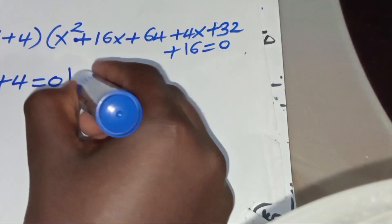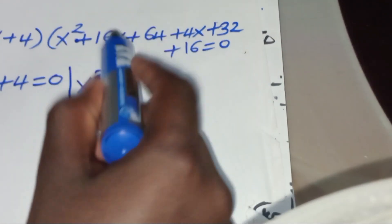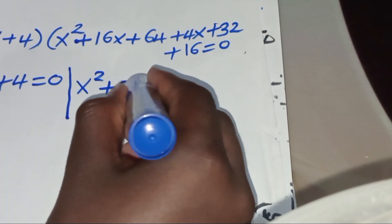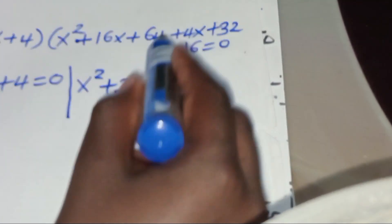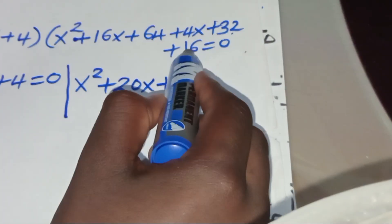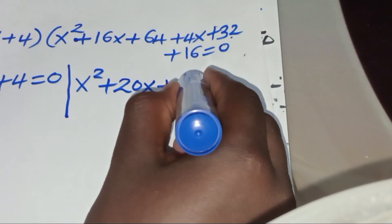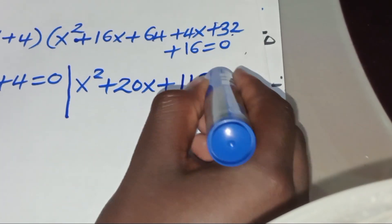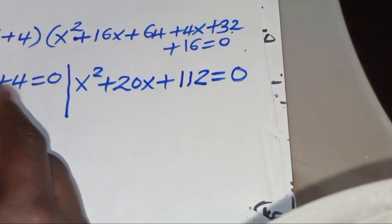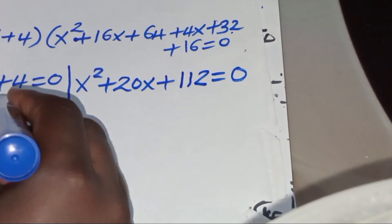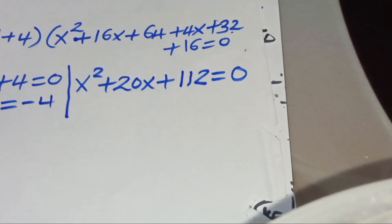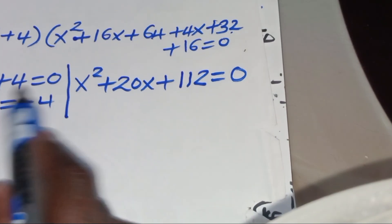The quadratic part is x² + 20x + 112 = 0. From the first part, x₁ = −4, which is the first real solution.